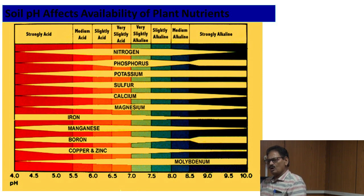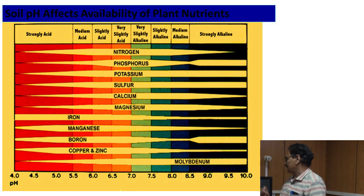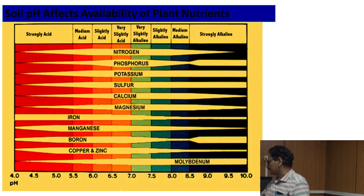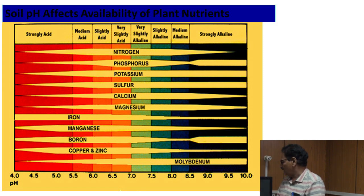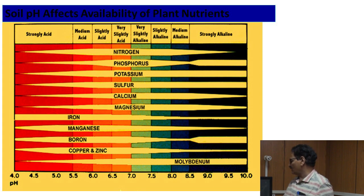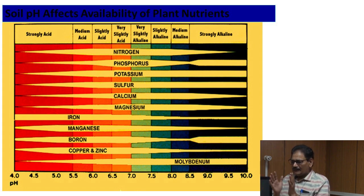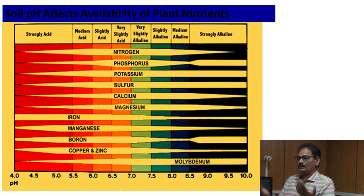Phosphorus also becomes less available at the acid condition. Just like potassium — also less available. Sulfur — also less available. Calcium — also less available. Magnesium — also less available. So you can say nitrogen, phosphorus, potassium, sulfur, calcium, and magnesium are problematic and less available in the acidic soil condition.